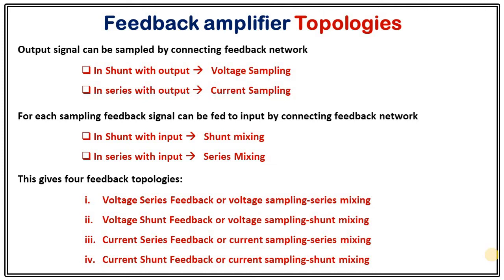These are the four different topologies of feedback amplifier: first, voltage series feedback or voltage sampling series mixing; second, voltage shunt feedback or voltage sampling shunt mixing; third, current series feedback or current sampling series mixing; and fourth, current shunt feedback or current sampling shunt mixing.